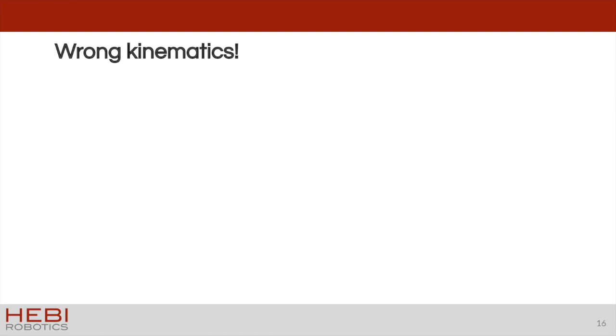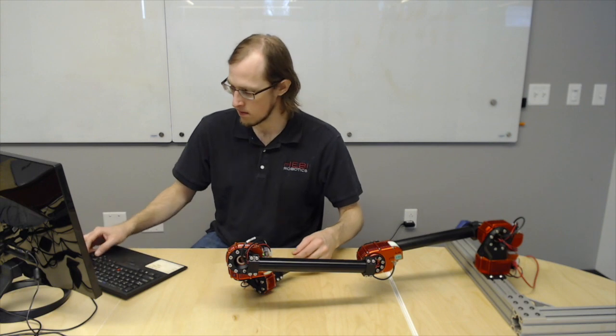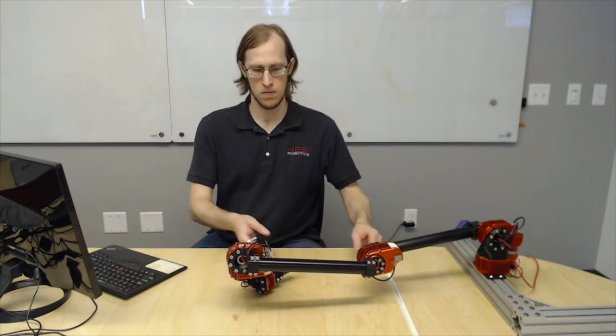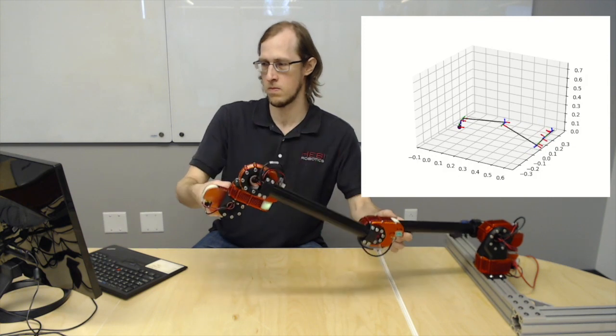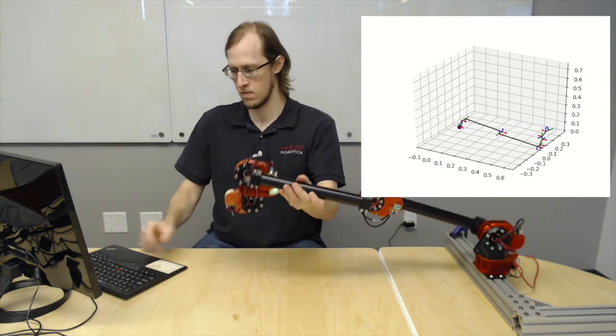So here we turn on the robot and we're visualizing the kinematics live as we go using a simple Python script. Here you can see the kinematics don't match, but it's very easy to identify the first module in the chain that is reversed.